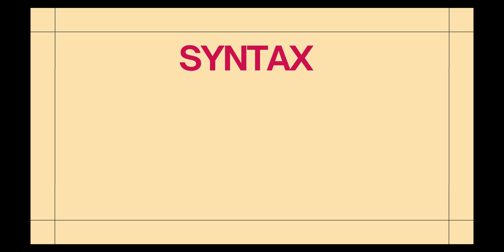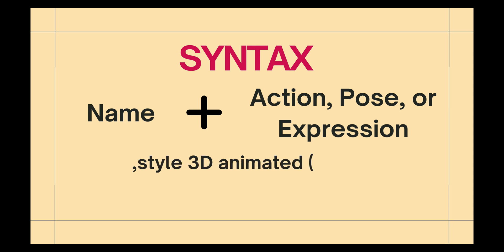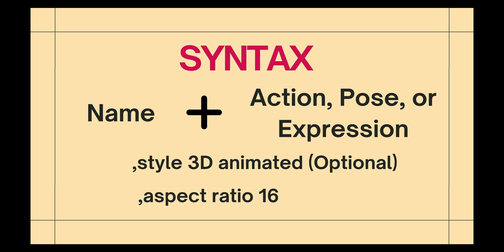Now you can create actions, expressions, or poses for your character to bring them to life. It's as simple as following this syntax: start with the character's name, followed by the action, pose, or expression you want them to perform. If you prefer a certain style, like 3D animation, you can add that too. And don't forget, you can also specify the aspect ratio, such as 16:9, to ensure your image fits perfectly with your project.